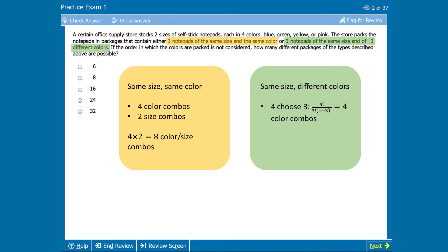Onto size. Now, just like in the first type of package, we know all of the notepads are the same size. So there are only two options, large and small. Bringing color and size together, we have four options for color, each of which can come in two different sizes. So there are four times two equals eight different packages where all three notepads are the same size but different colors.